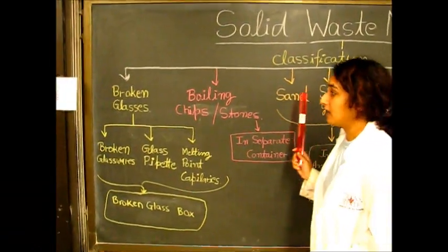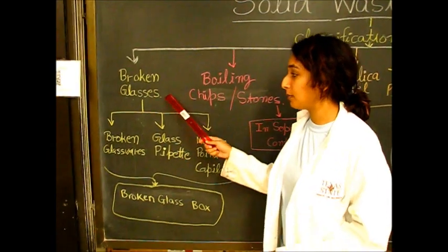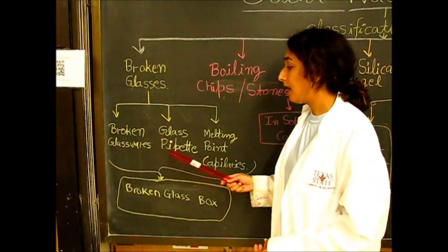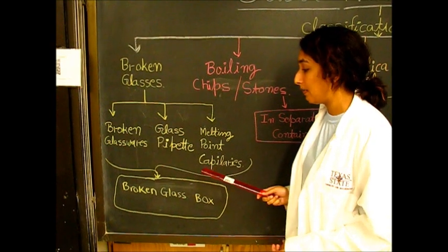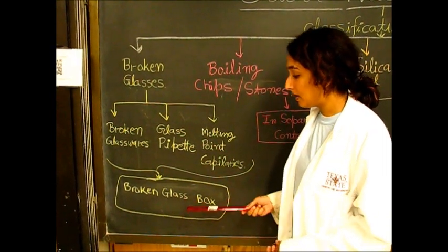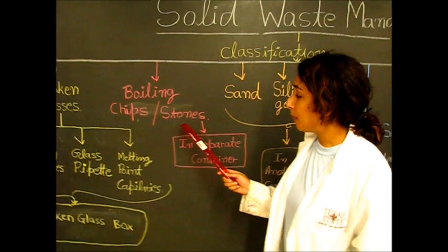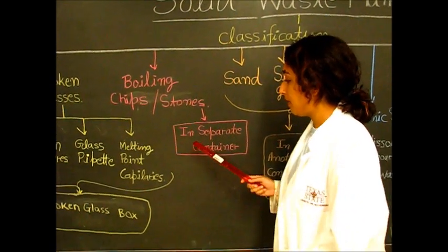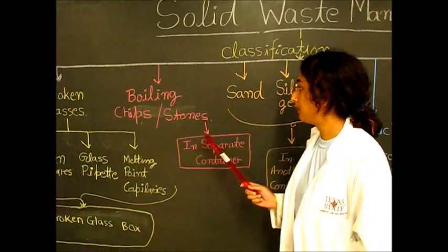There are a couple different classifications. The first is broken glass, which includes broken glasswares, glass pipettes, and melting point capillaries. These are all placed in a broken glass box. For boiling chips and stones, we put them in a separate container located in the fume hood.